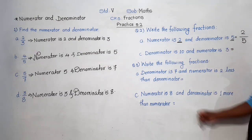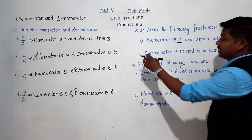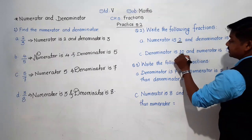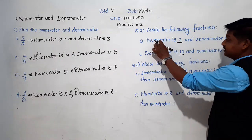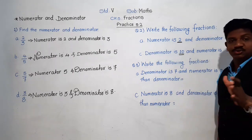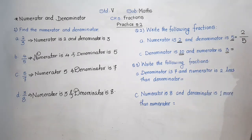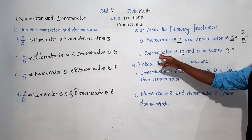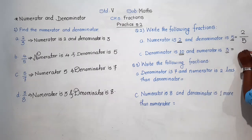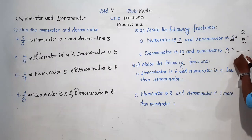Moving to example C in question 2 — I have skipped example B as homework. Example C: denominator is 3 and numerator is 3. Here the denominator is given first. You know the denominator is written below the bar, so write 3 below. If numerator is given first, write it above; if denominator is given first, write it below. Numerator is 3 so it is written above. So the fraction is 3 upon 3. You have to solve examples B and D as homework.